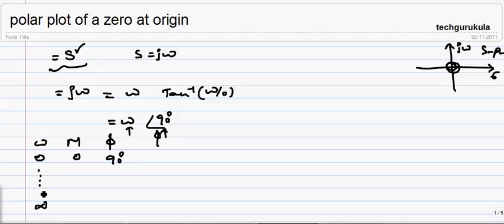And if we change omega, M is going to increase proportional to omega because M is omega. So when omega tends to infinity, M tends to infinity, but the phase angle is not going to change, which is going to be same, 90 degrees.